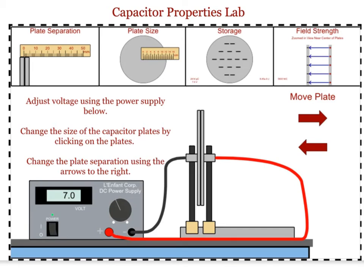Under the storage tab, students can read off the amount of charge stored on the plates, the voltage on the plates, and the energy stored on the plates. Under field strength, students can see a visual representation of the field near the center of the plates — edge effects won't be important if we're looking only at the center — and they can also get a reading on the field strength.